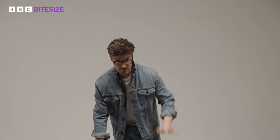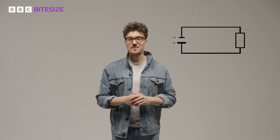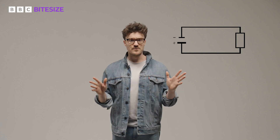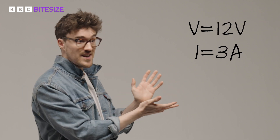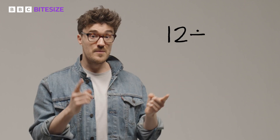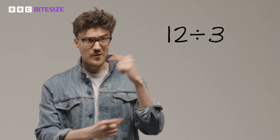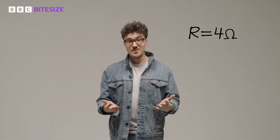Let's put your knowledge of Ohm's Law to the test. I'll measure the voltage across this resistor and the current flowing through it — see if you can get it right too. We have the voltage, which is 12 volts, and the current I is 3 amps. So our resistance is voltage divided by current: 12 divided by 3 is 4. The resistance in this circuit is 4 ohms. This kind of calculation helps engineers and electricians design circuits safely, ensuring the right amount of resistance is used to control the current flow.